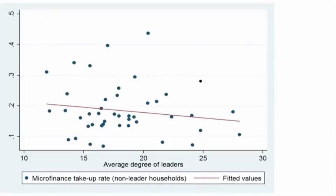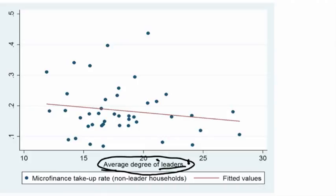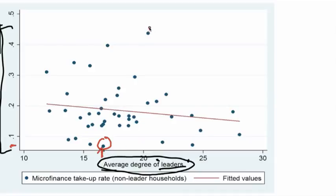What do we see in the data? Here is the average degree of the first contacted individuals — the leaders, meaning the contacted teachers, self-help group leaders, and shopkeepers — plotted against the eventual participation rate of the village. Each dot is a village. For instance, one village had a 7% participation rate with average leader degree of about 17, while another had average degree of 21 and a participation rate of 44%. If you fit a best-fit line, it doesn't look like there's any relationship — the slope is actually slightly negative. So degree centrality doesn't appear to capture what's going on.